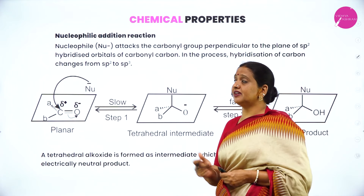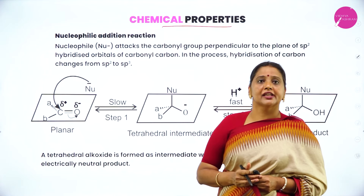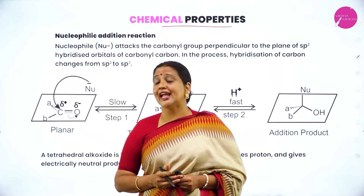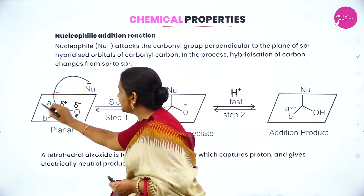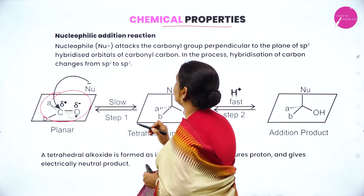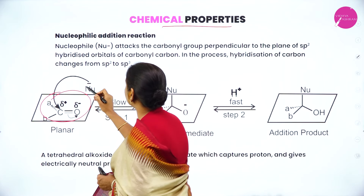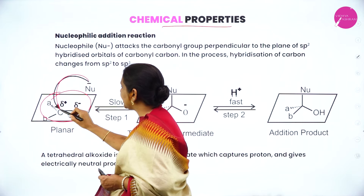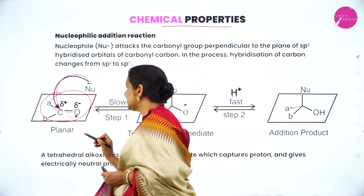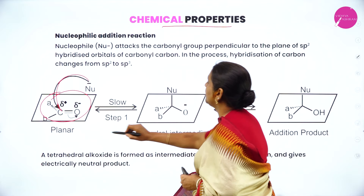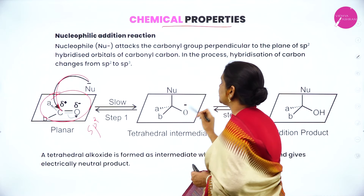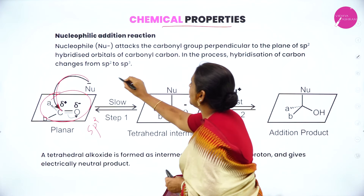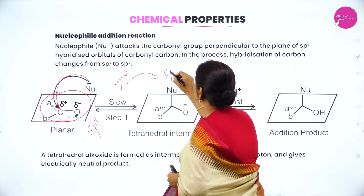Now let us consider the chemical properties of aldehydes and ketones. In the previous chapter we studied nucleophilic substitution; in this chapter I will explain nucleophilic addition. This is the 3D structure of the carbonyl compound — aldehyde or ketone. The nucleophile attacks the carbon of the carbonyl group from the direction perpendicular to the plane of the SP2 hybrid orbital, and hybridization changes from SP2 to SP3.